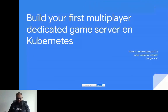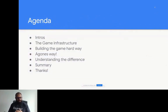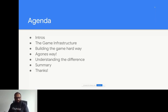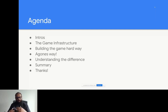Here's our agenda: we'll do a short intro, talk about game infrastructure as a whole — how the game backend and frontend look — then build a game step by step. I have a core script already executed. I'll also show another way using Agonis, an open source project, and explain the difference between the hard way versus the Agonis way. I have two demos for you.